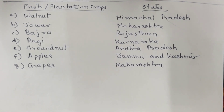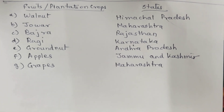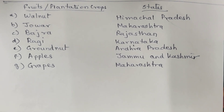Fruits and plantation crops with their states: Almond - Himachal Pradesh; Jowar - Maharashtra; Bajra - Rajasthan; Ragi - Karnataka; Groundnut - Andhra Pradesh; Apples - Jammu and Kashmir; Grapes - Maharashtra.